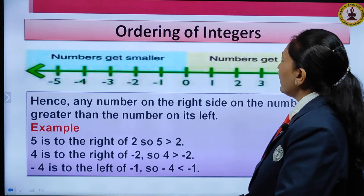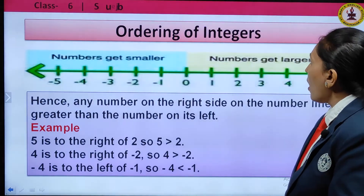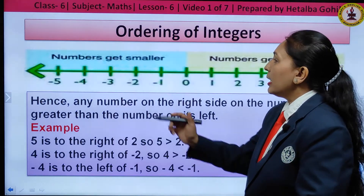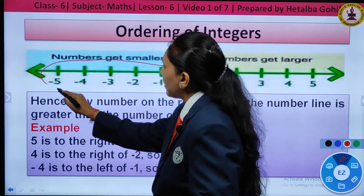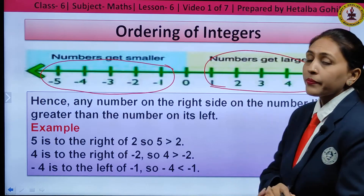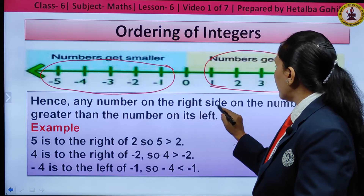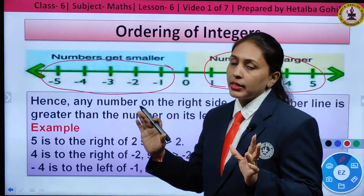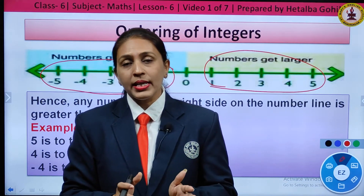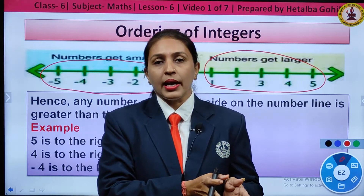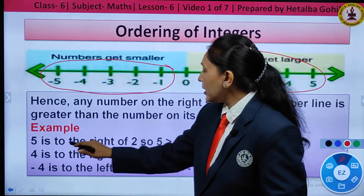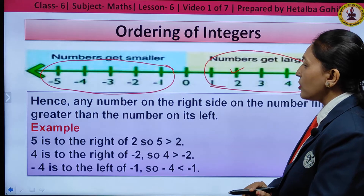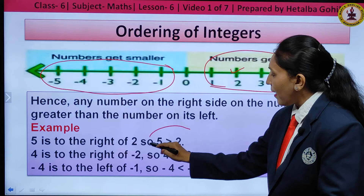The next topic is ordering of integers — which is smaller, which is greater, which is equal. Any number on the right side of the number line is greater than the number on its left. Numbers on the left side are always smaller; numbers on the right side are always greater. For example, 5 is to the right of 2, so 5 is greater than 2.